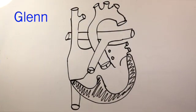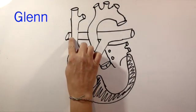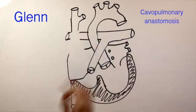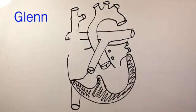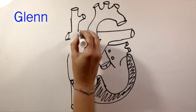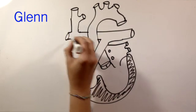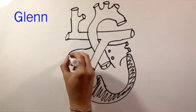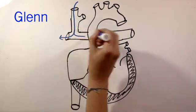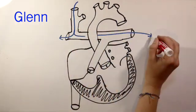First, we have to review Glenn physiology, a surgery also sometimes called a cavopulmonary anastomosis. The Glenn is the second stage of a single ventricle reconstruction when the superior vena cava, the SVC, is detached from the heart and attached to the pulmonary artery. Blood from the head and upper extremities bypass the heart and flows passively into the lungs.